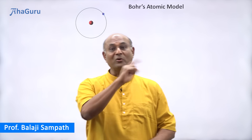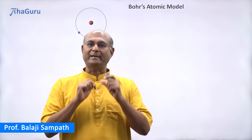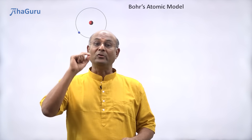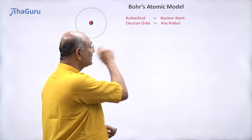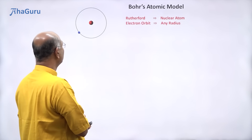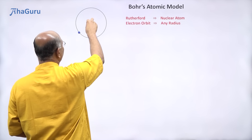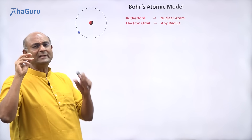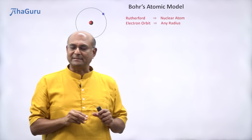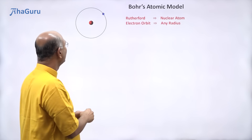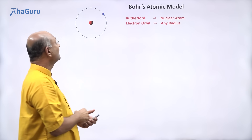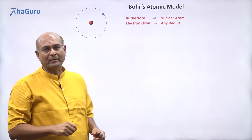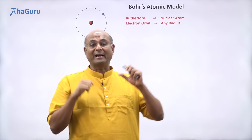Let us now learn about Bohr's model of an atom. We have already learnt that Rutherford had come out with the nuclear model. In Rutherford's nuclear model for the atom, all the positive charge was at the center in a very small space, which we call the nucleus. This has most of the mass of the atom, and the electron roams around in a circular orbit very, very far away.